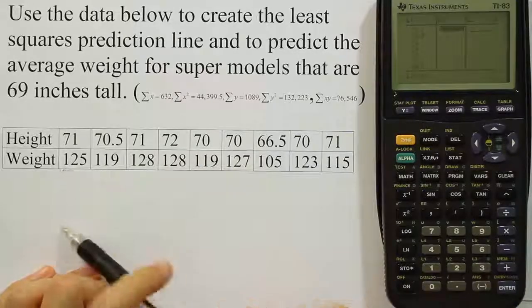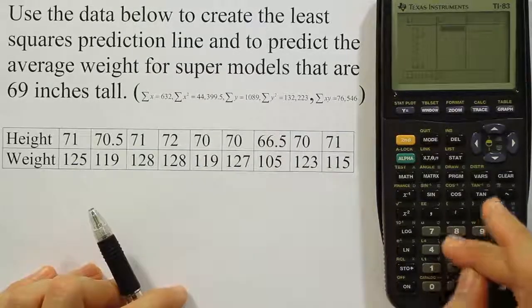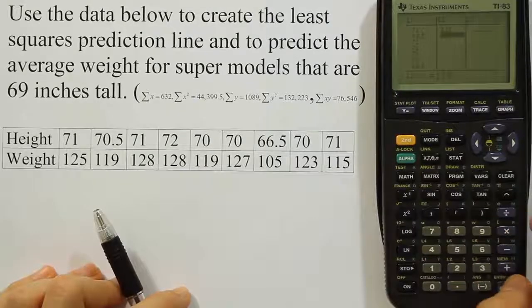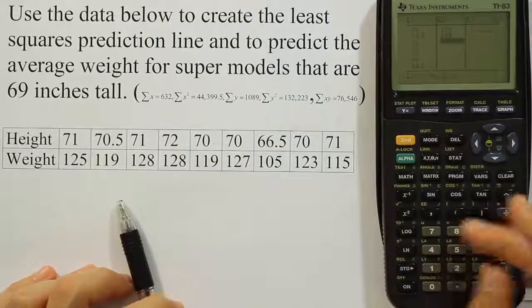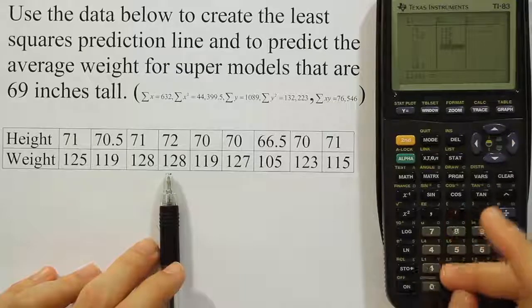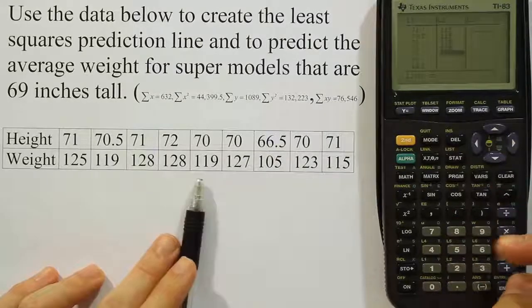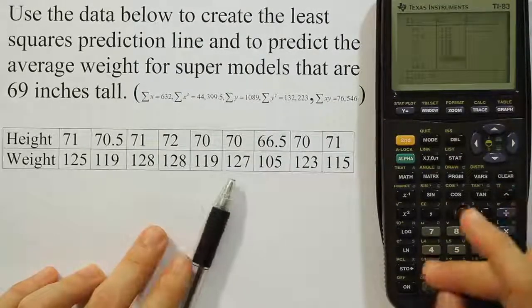Now I'm going to put all the weights into L2. So I'm going to have 125, 119, 128, another 128, and 119, 127.